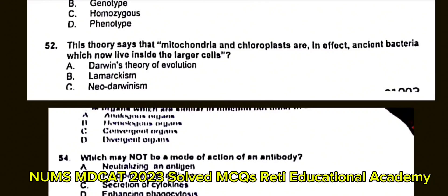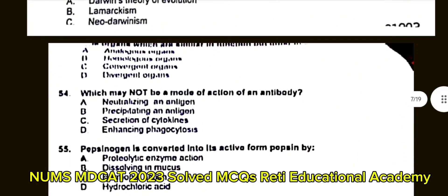Question number 54: Which may not be a mode of action of antibodies? A. Neutralizing an antigen. B. Secretion of cytokines. C. Enhancing phagocytosis. The correct answer is C: Secretion of cytokines.